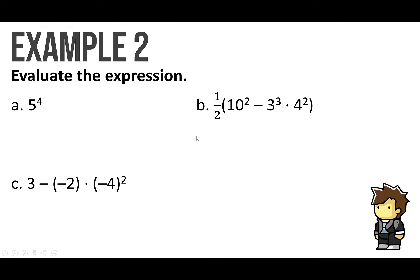Now we're going to evaluate the expressions — actually calculate them. So 5 to the 4th power is 5 times 5 times 5 times 5. If you use your calculator, that's 625.